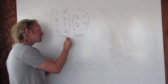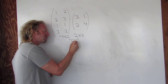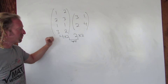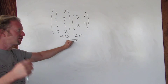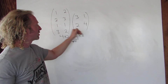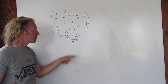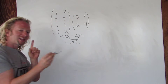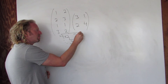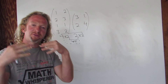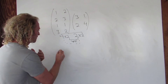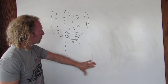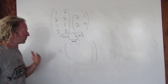So whenever the inside numbers match — yes, we can multiply. The four by two matrix has dimension four by two, and the two by two matrix has dimension two by two. Whenever the inside numbers match, yes, you can multiply, and the result is always the outer numbers. So the result is going to be a four by two matrix with four rows and two columns.